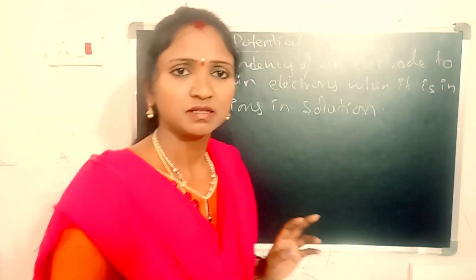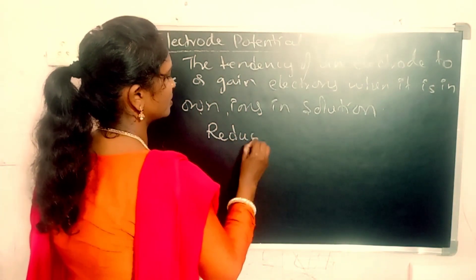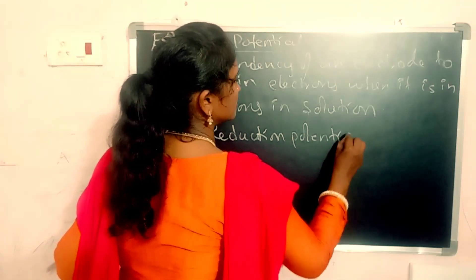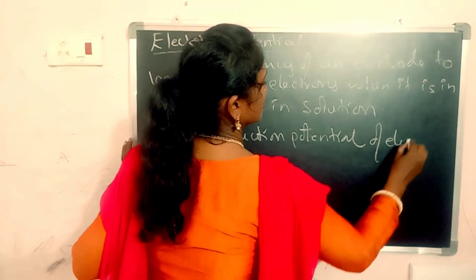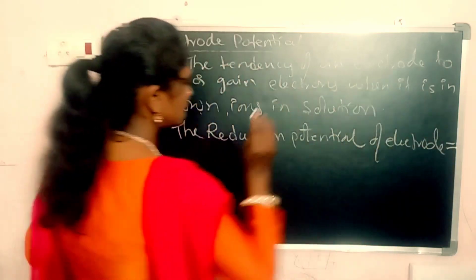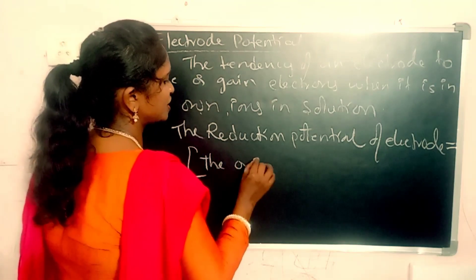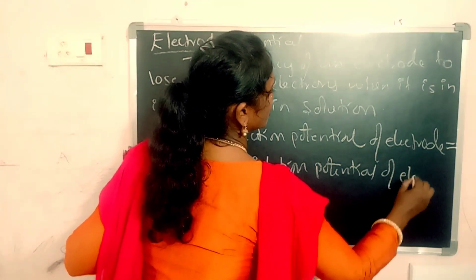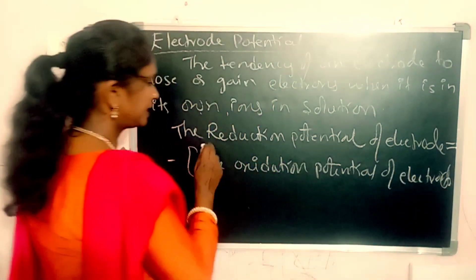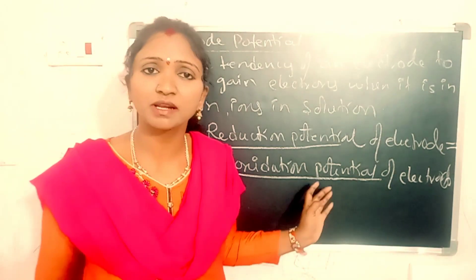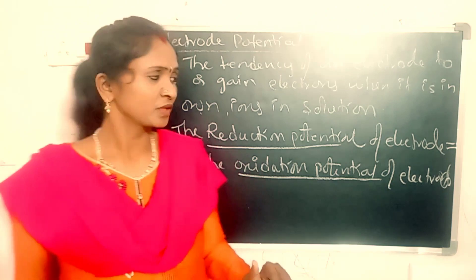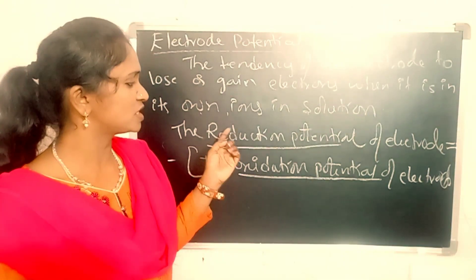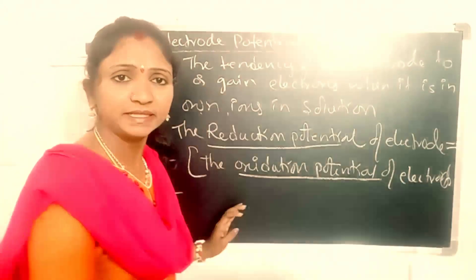Generally, the reduction potential of an electrode is always equal to the minus of the oxidation potential of that electrode. This means reduction electrode potential and oxidation electrode potential are inversely proportional. If one is positive, the other is negative.